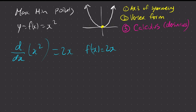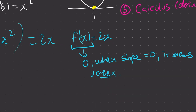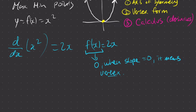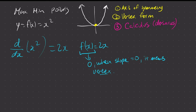So how do we do it? We set this to be zero. Because when slope is equal to zero, it means vertex. So you just know this: it's a vertex when slope is zero. So if we were to sub in zero there, we will have 0 = 2x. So x is equal to zero. We know when x is equal to zero, we're going to have a minimum point — we're going to have a vertex.